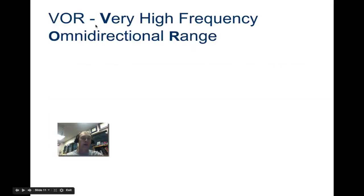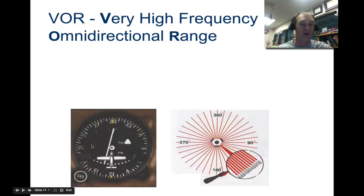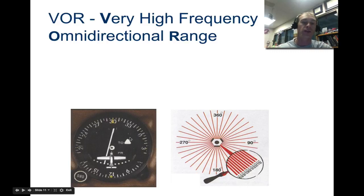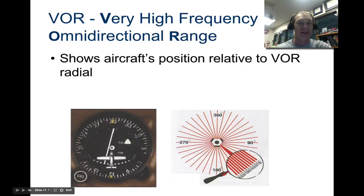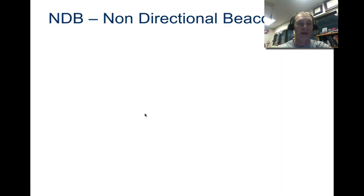You'll also learn more about VOR — very high frequency omnidirectional range. This is a VOR indicator inside an airplane, and you'll learn how to navigate using VOR in the next presentation. When you do your flight simulators, you'll have to fly from point to point using only VOR navigation. The indicator shows the aircraft's position relative to the VOR radial.